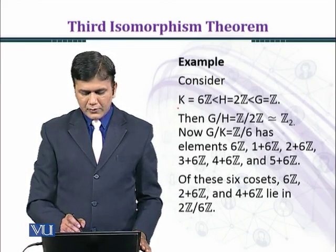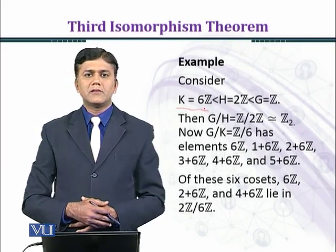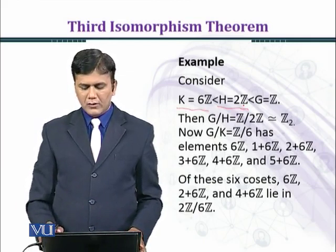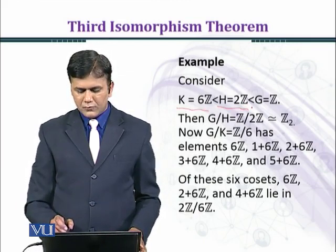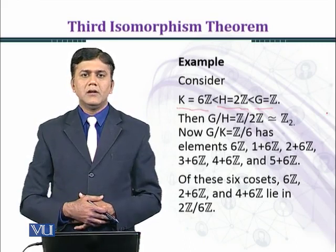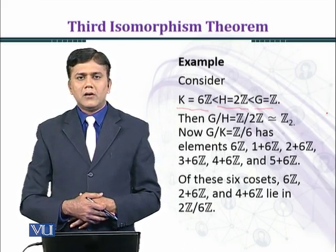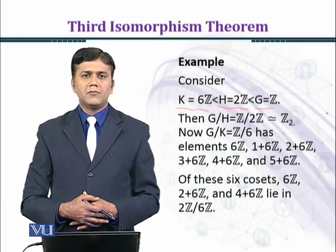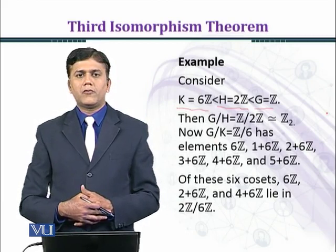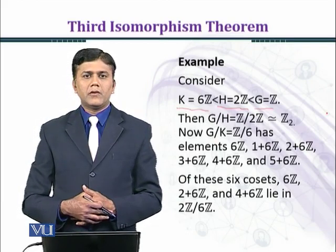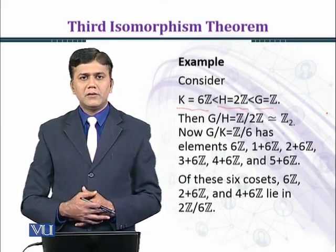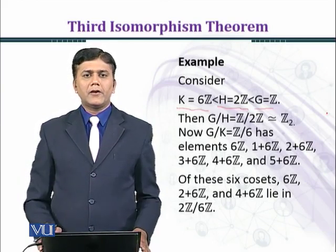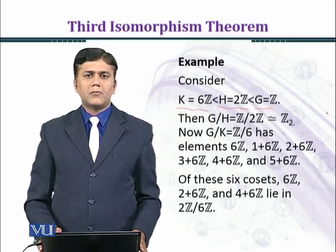Let's consider an example in which K equals 6Z, which is a subgroup of H given by 2Z, which is a subgroup of G given by Z. All these groups are groups under addition. Z is the set of integers; 2Z is the set of even numbers, a subgroup of Z; and 6Z, the multiples of 6, is also an additive subgroup of Z.